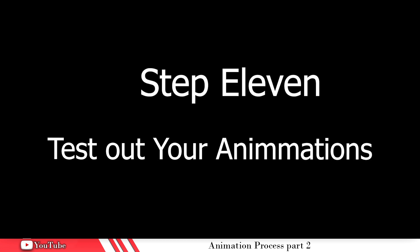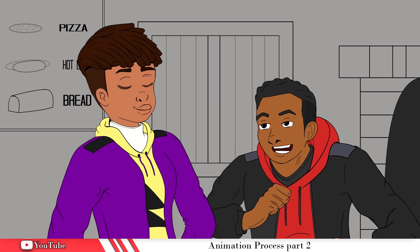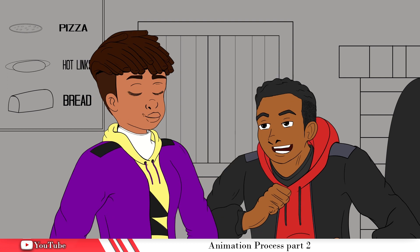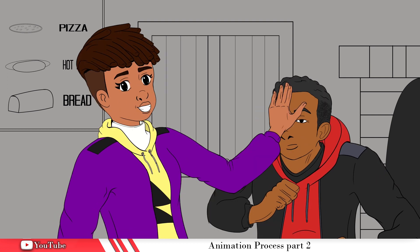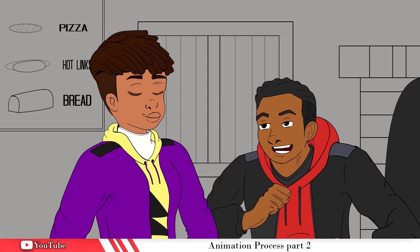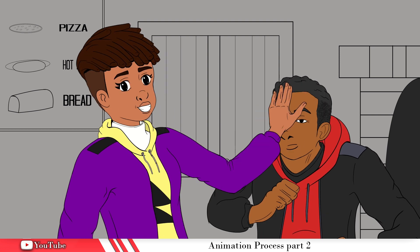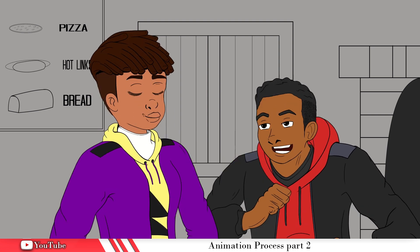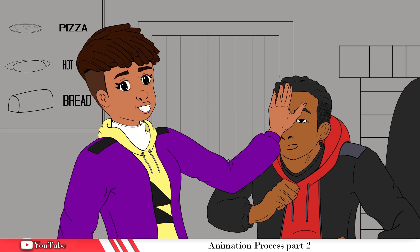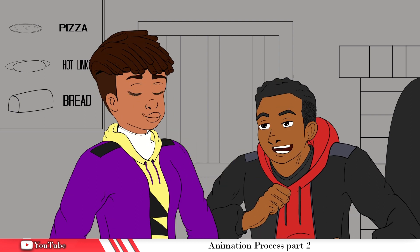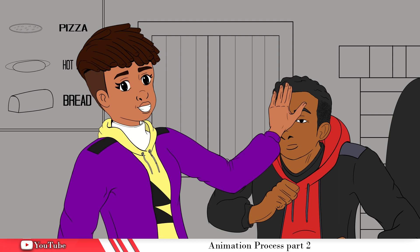Step eleven: test out your animations over your backgrounds. Those things you just inked — those backgrounds — test those animations out. Make sure they fit in those scenes. That way you don't start coloring the background and then see that the animation doesn't even fit right. You can go back and make those adjustments. Keep testing out your animations in the backgrounds you just inked just to make sure. I'm pretty sure you tested it when you were doing the animatics, but just do it anyway to double check.